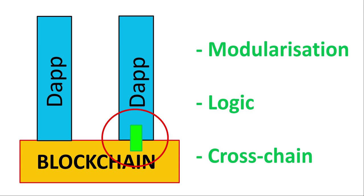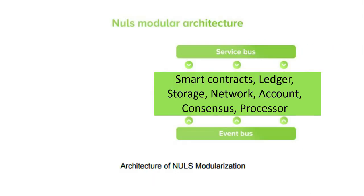There are three unique properties to the NAUS project: modularization, logic, and cross-chain. If you understand these three properties as well as their unique consensus algorithm, you will understand the NAUS project.